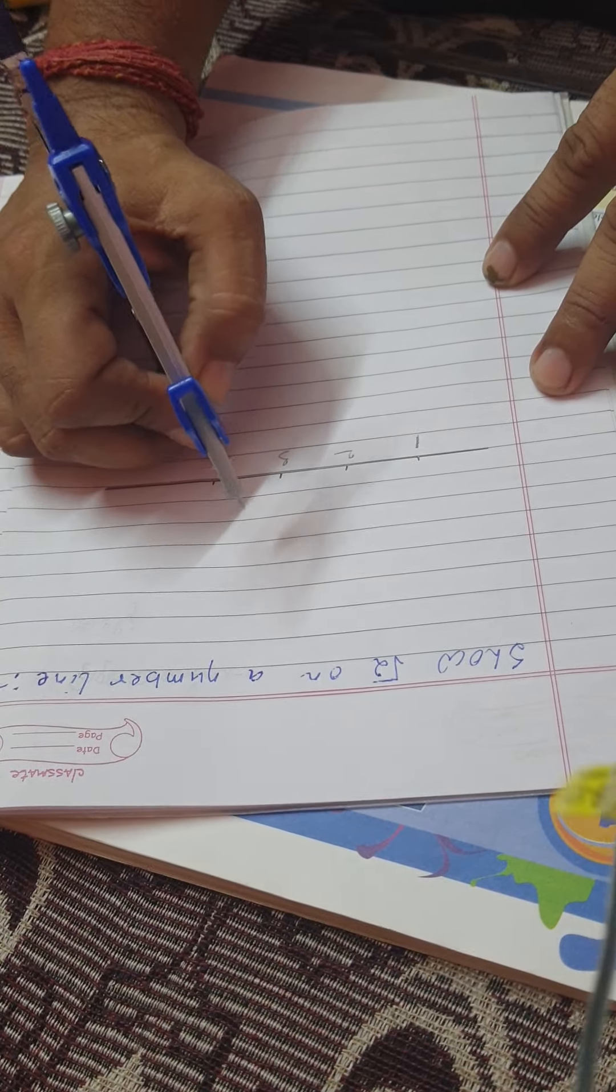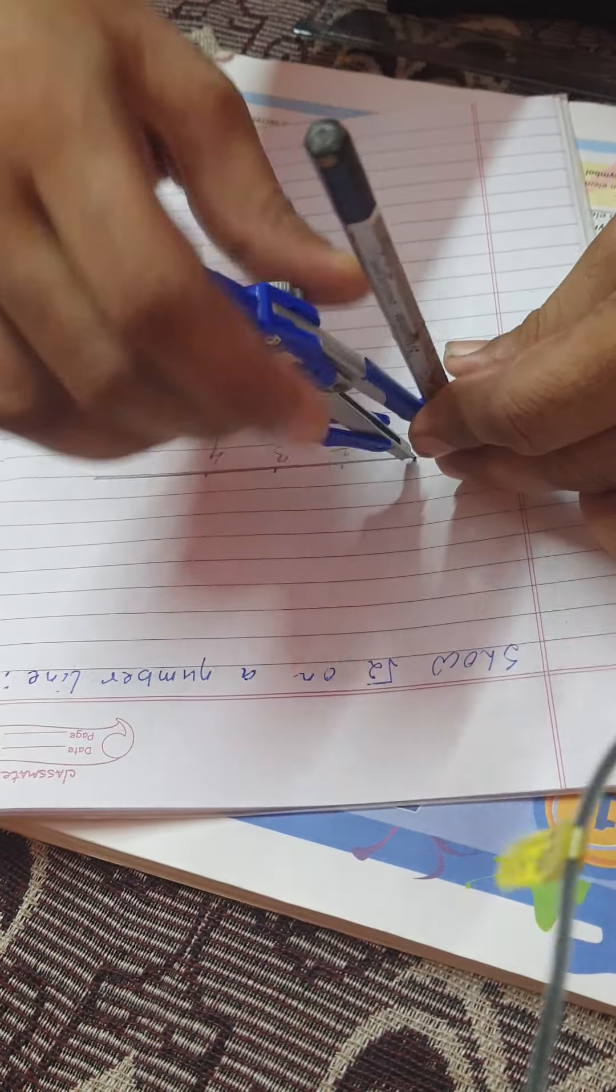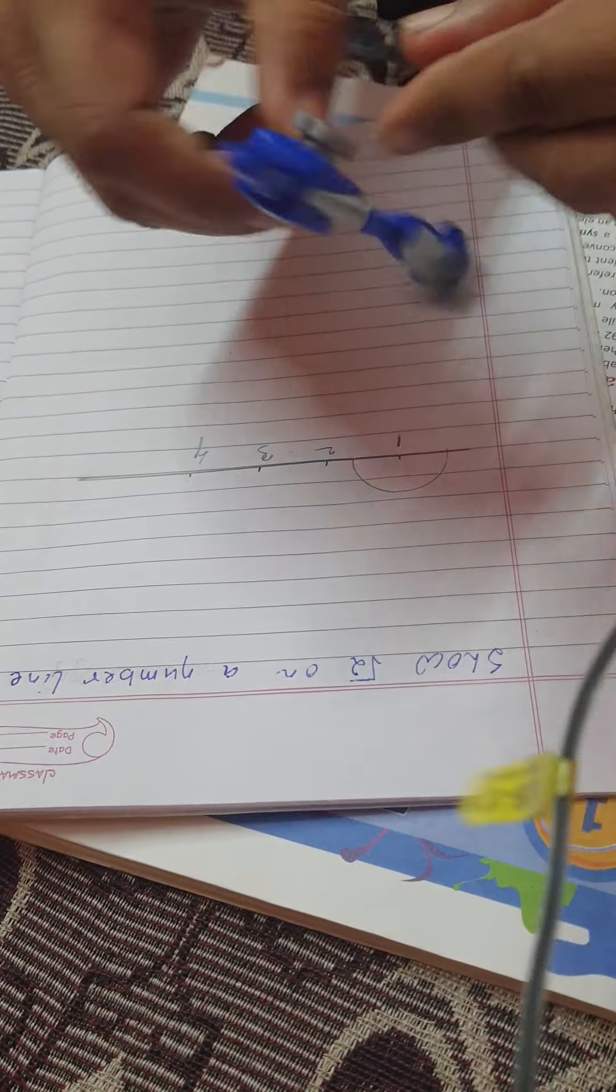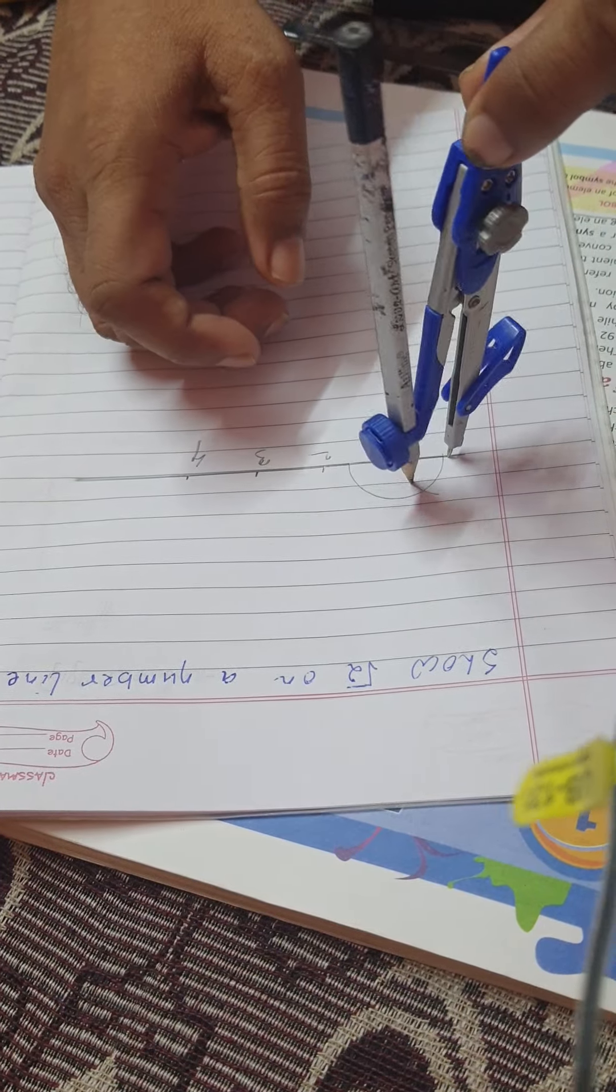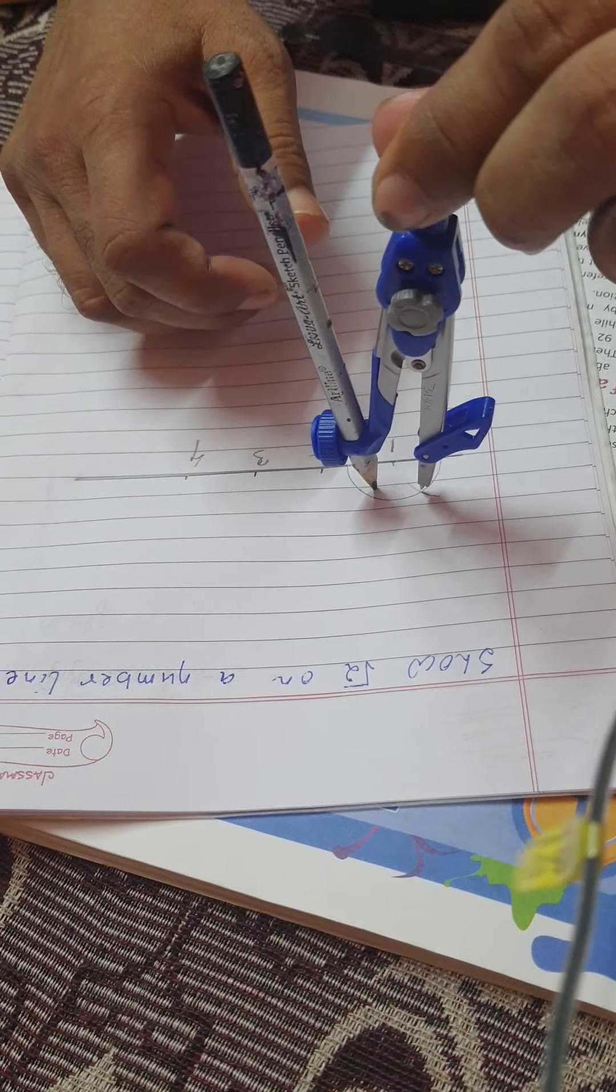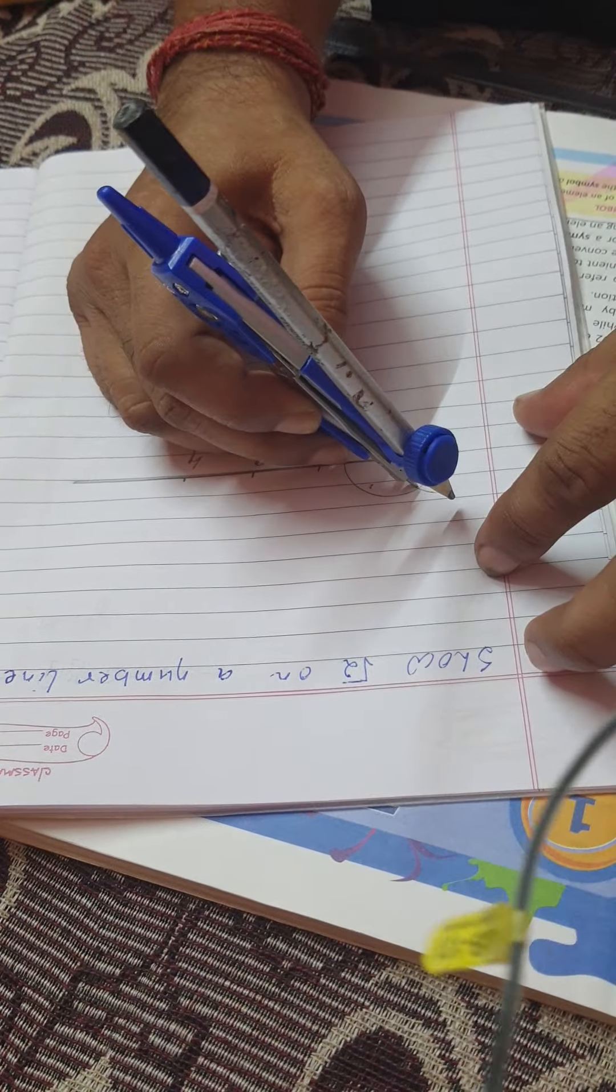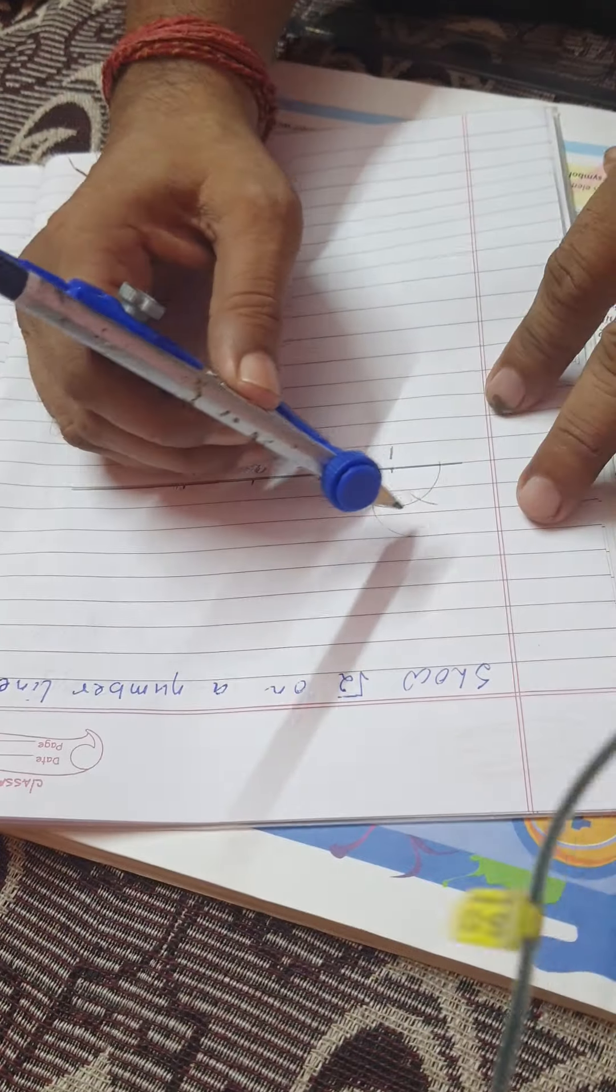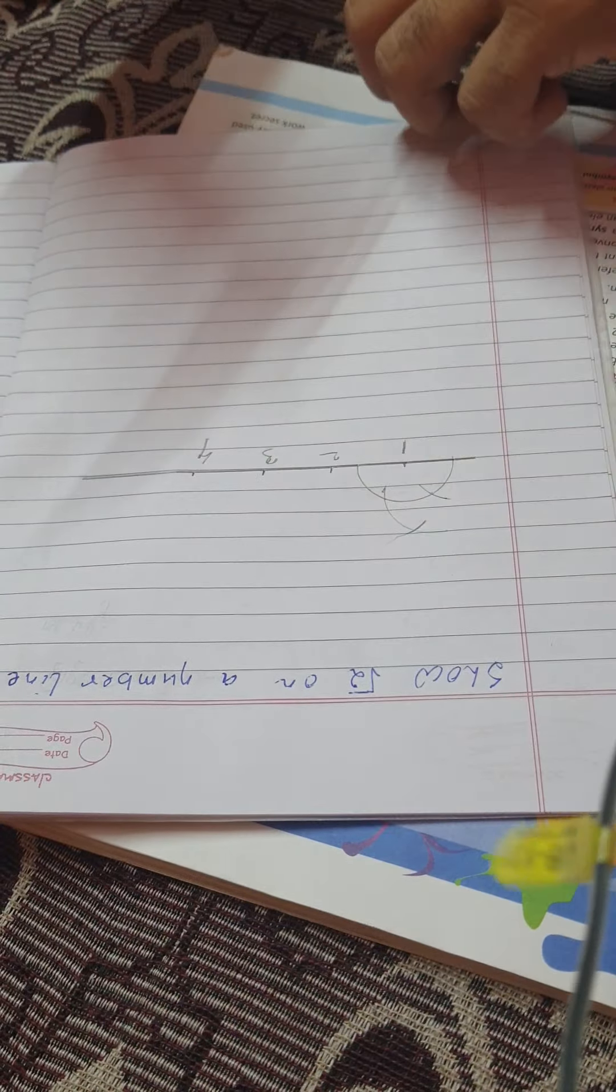On number one, we will make a perpendicular. We will take an arc of 60 degrees. Thereafter, we will take an arc of 120 degrees and intersect with these two to get 90 degrees.